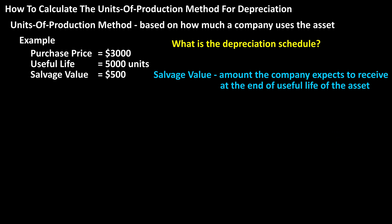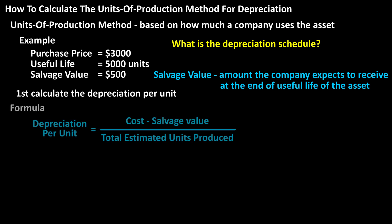In order to create the depreciation schedule, we must first calculate the depreciation per unit. The formula for that is: depreciation per unit equals the cost of the asset minus the residual or salvage value, divided by the total estimated units produced.